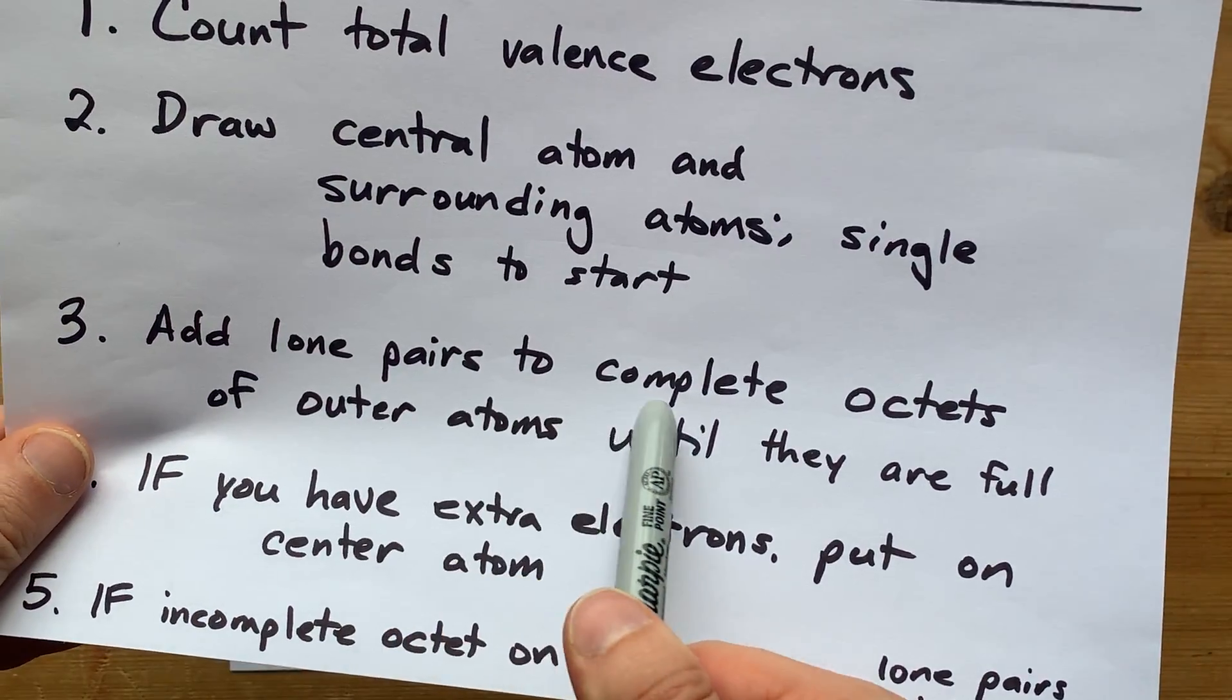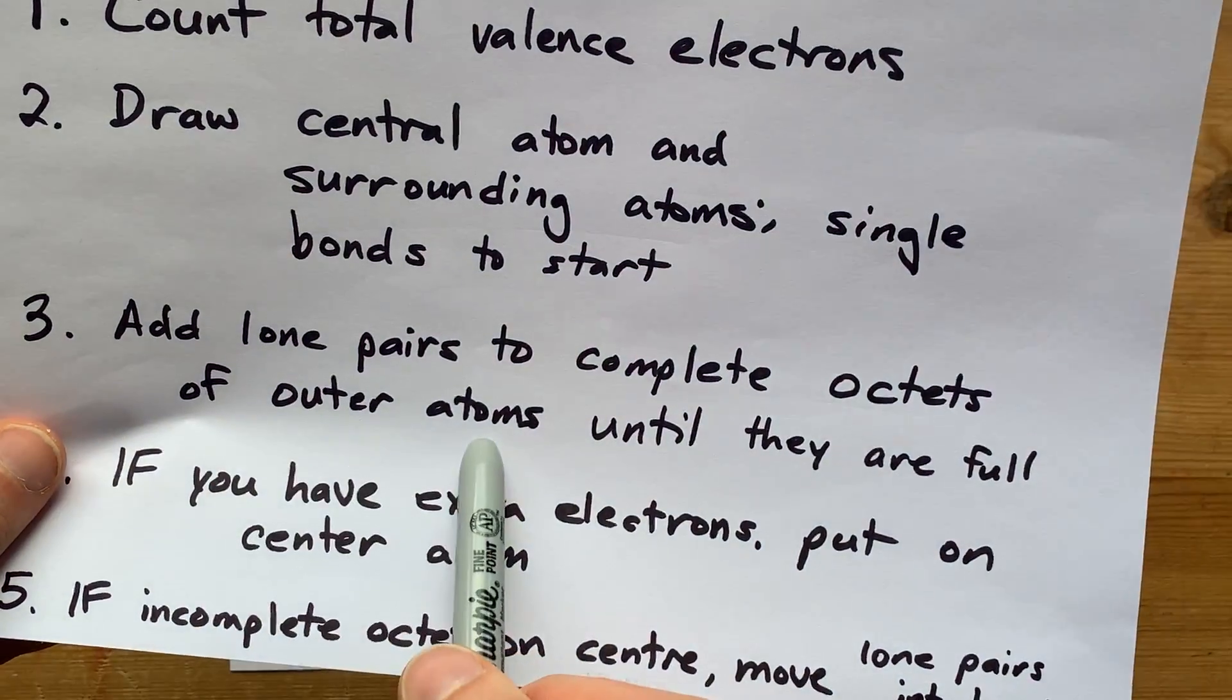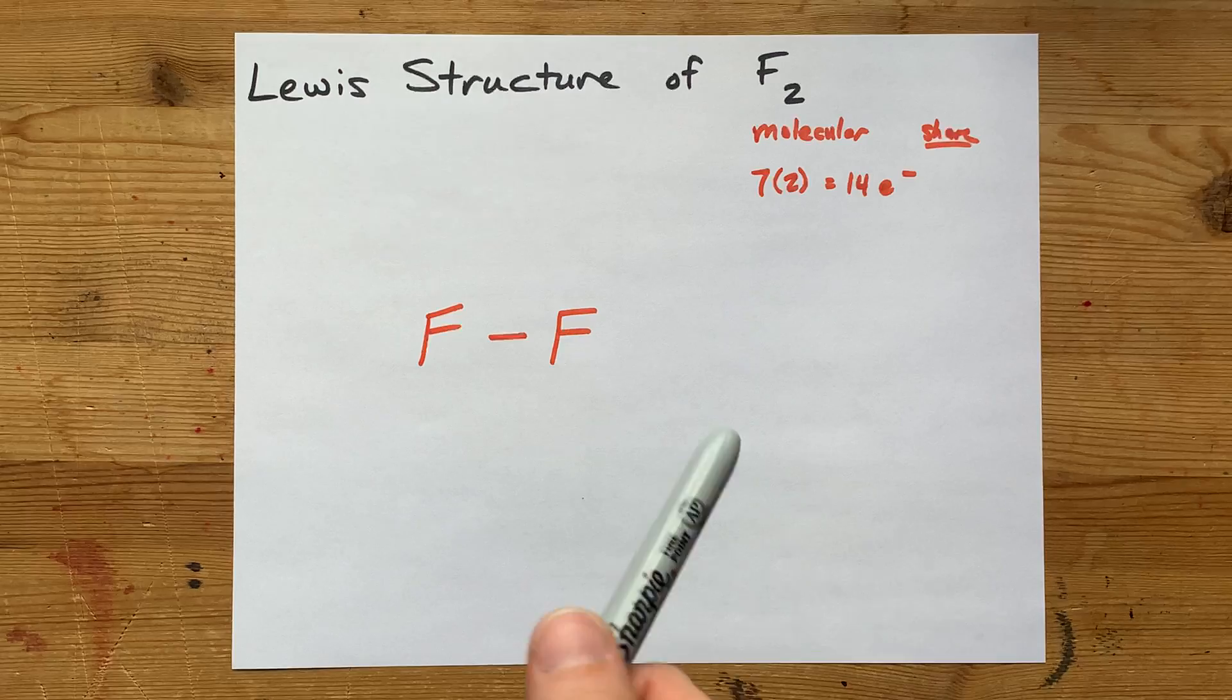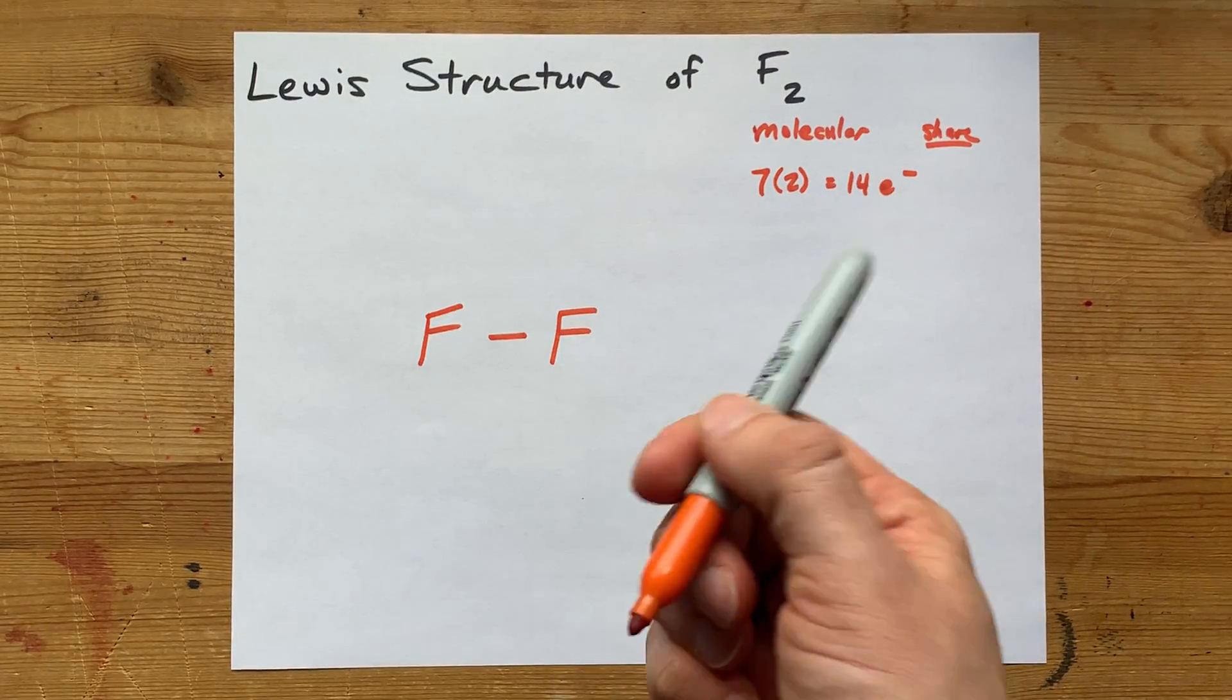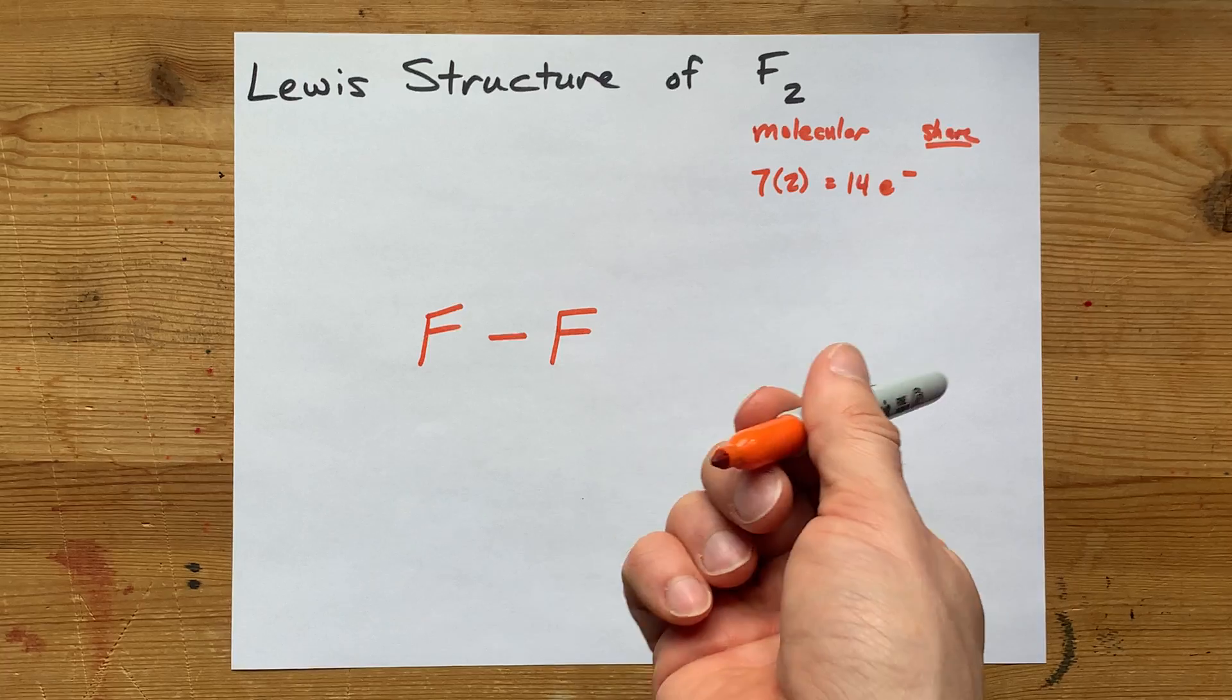Then I'm going to add lone pairs to complete the octets of the outer atoms until they're full. I'm going to be careful not to go over 14 electrons total, though, because that's all I'm allowed to use.